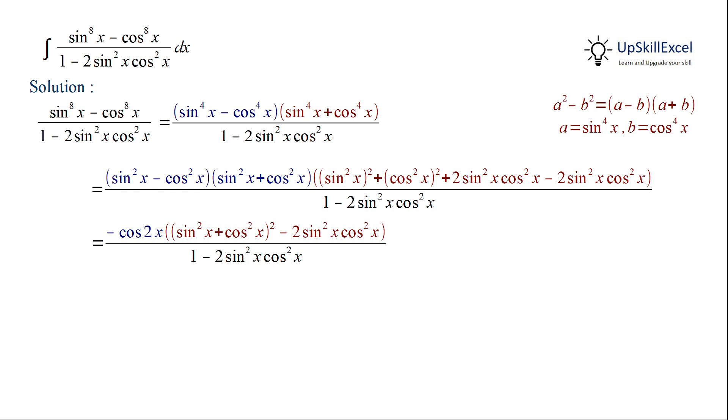As sin square x plus cos square x is equal to 1, we can rewrite the second term as 1 minus 2 sin square x cos square x, which will get cancelled out with the denominator. Hence, our function gets simplified to minus cos 2x.